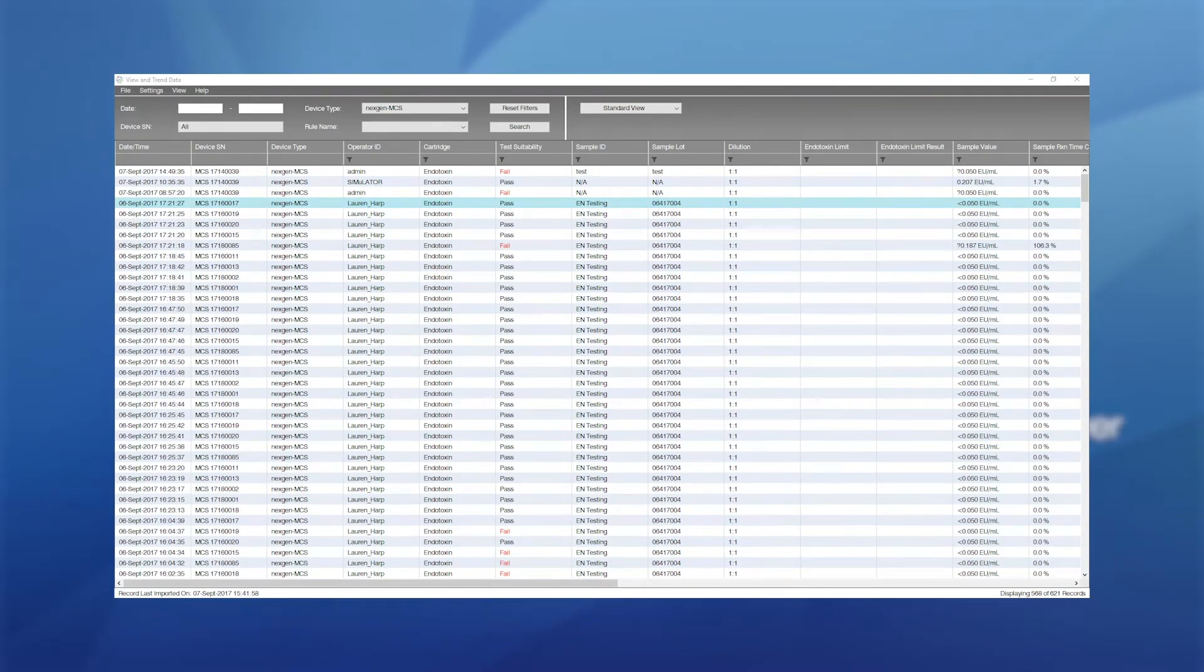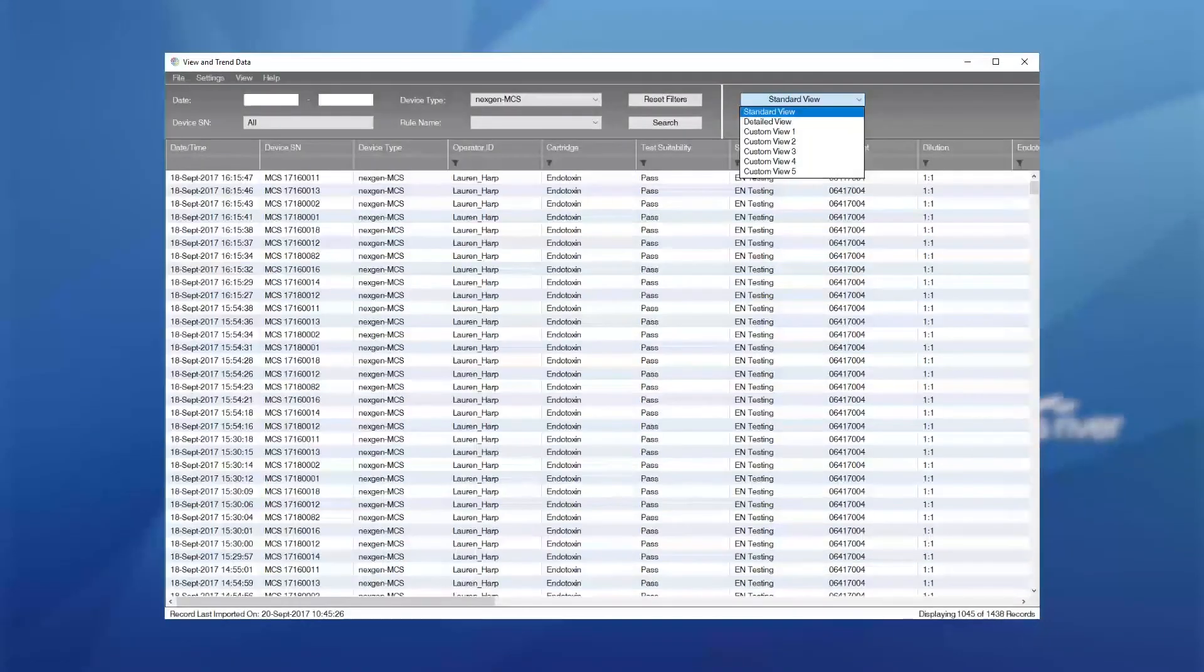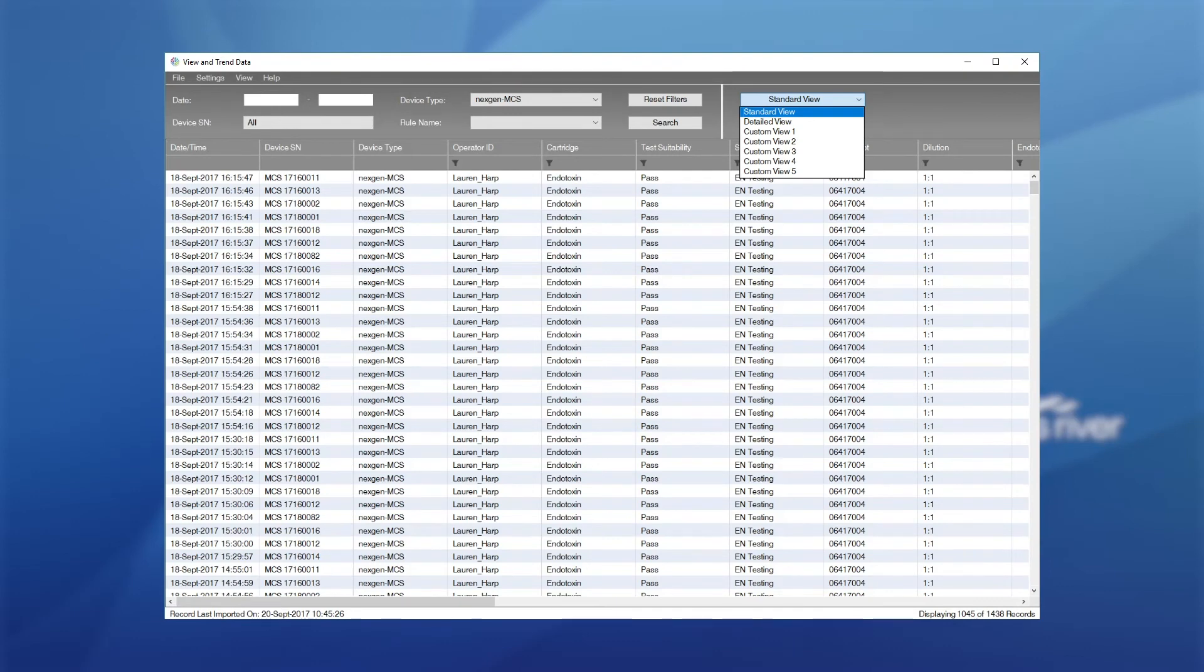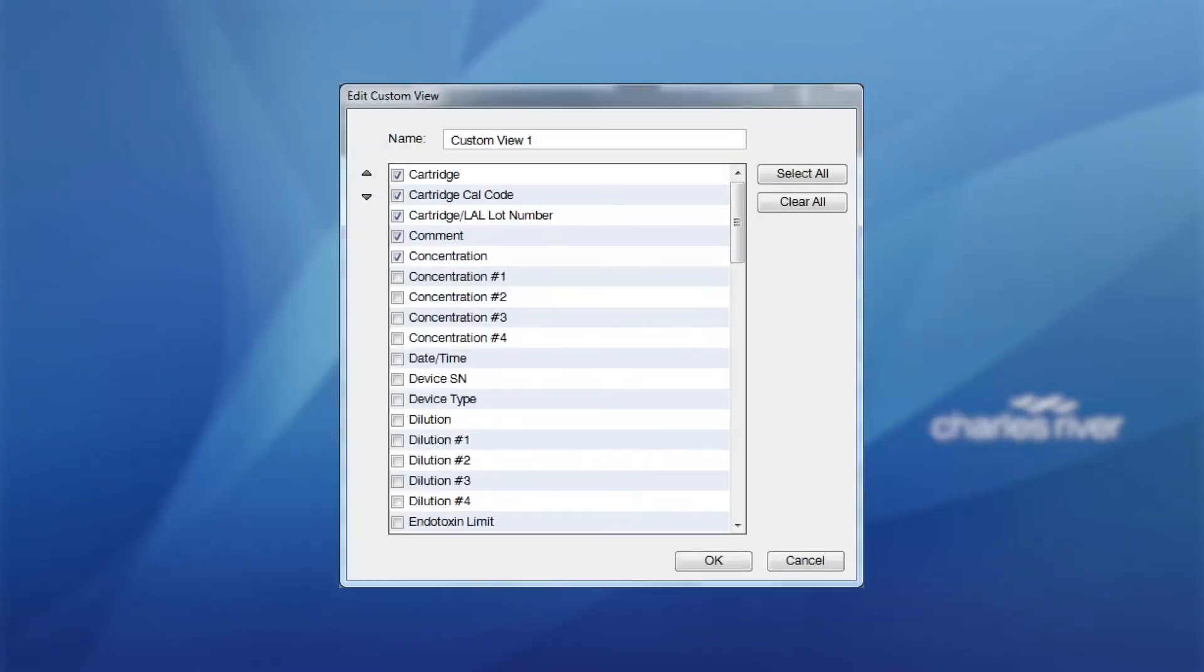Please note, the user must document if they will print and sign reports in Cortex or in EndoScan-V. They cannot do this in both. This data can be filtered further to include only the columns of data the user wishes to see. The user can carry out this function by clicking on the view drop-down box in the top right-hand corner of the main view and trend data screen. Click on custom view to edit the view you wish to customize. This custom view can then be named.